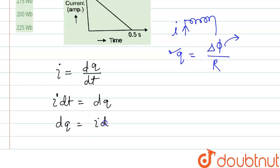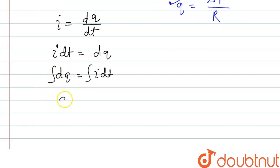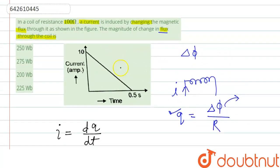And if we integrate this, the total charge will be q, and this side will be the area under curve, area of current time curve. So in the graph, the area is this. So area of this will be the total charge.